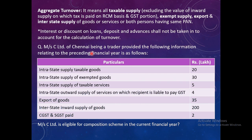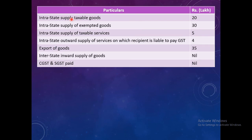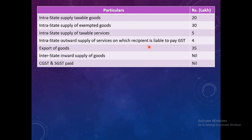Now let's see if Mr. C Limited is eligible for the composition scheme in the current financial year. Inter-state supply of taxable goods — included in turnover. Exempted goods — yes, included. Taxable services — yes, considered. Outward supply of services on which recipient pays GST (RCM) — yes, I include this from my side (the recipient won't). Export of goods — yes, considered. Inter-state inward supply of goods (purchase) — not considered, as it is my inward supply, my purchase. CGST/SGST paid — not considered. So total aggregate turnover = 20 + 30 + 5 + 4 + 35 = 94 lakh.